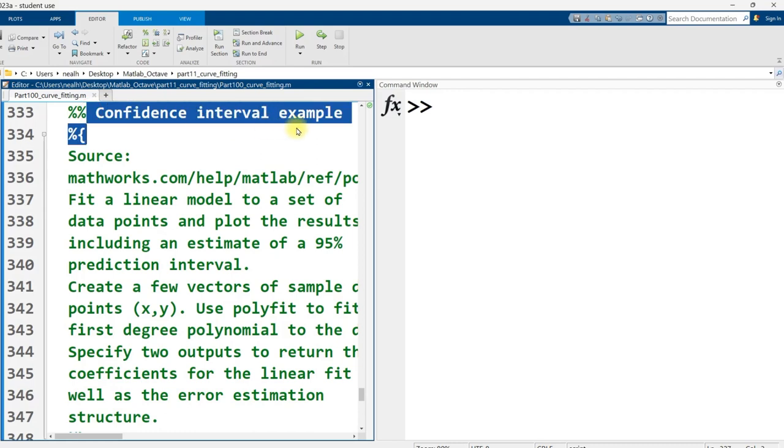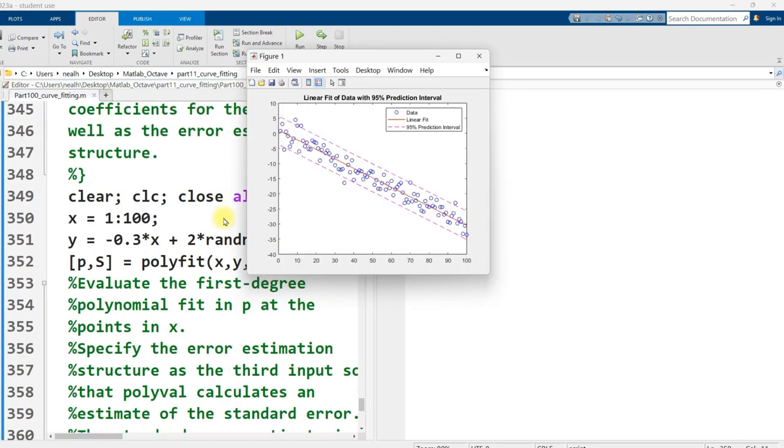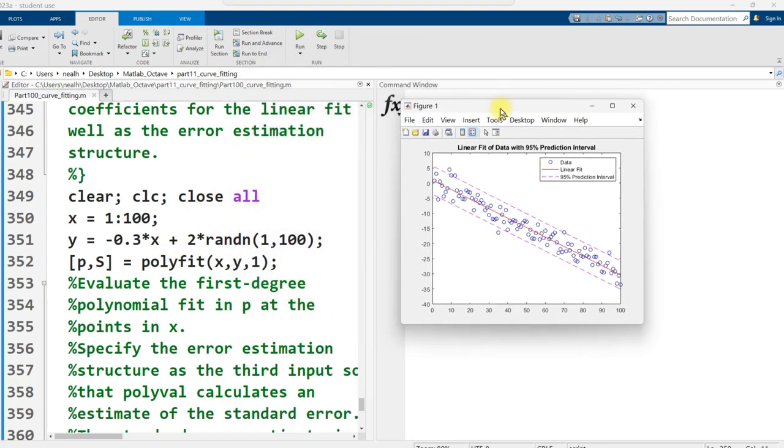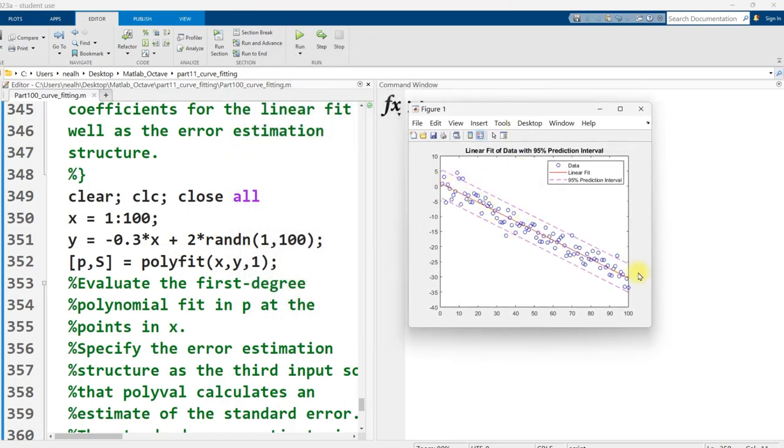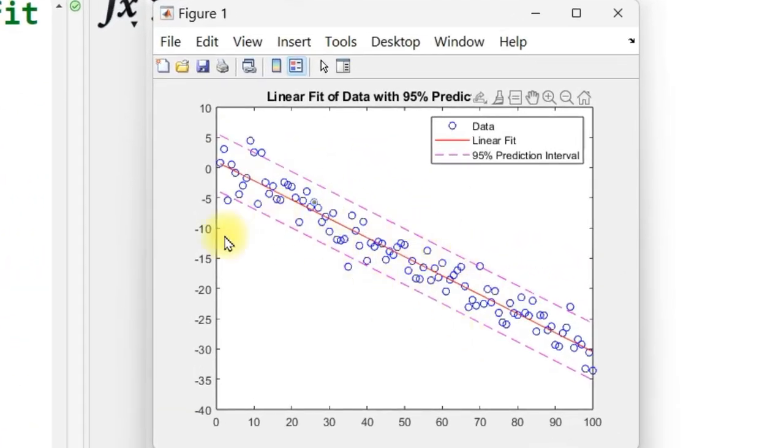And then very lastly, a confidence interval example. And I literally just pulled this from this MathWorks webpage. I'm pretty sure I just copied and pasted it. I think it's a useful and interesting thing that you can do with polyfit and polyval. So I've generated 100 random bits of data, these blue circles here. And then I found a 95% confidence interval, a sleeve around this fitted line that if I gather more samples from wherever I'm gathering samples, I can be 95% confident that the new samples will fall between the pink dashed lines.